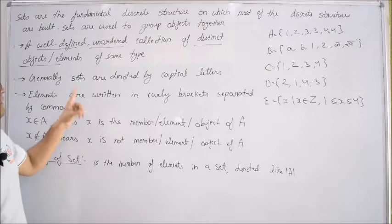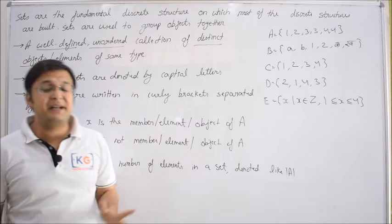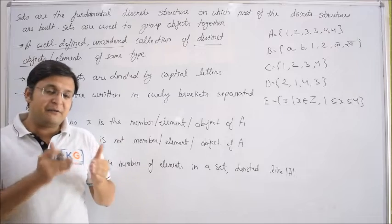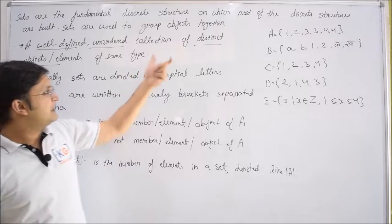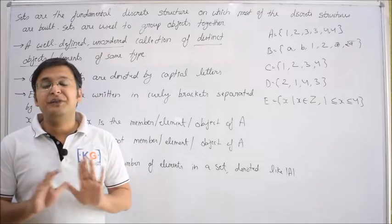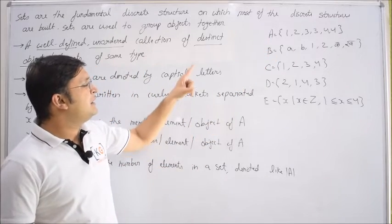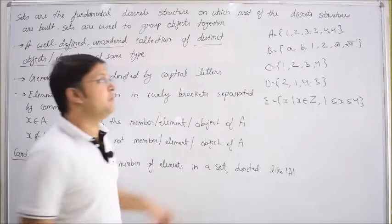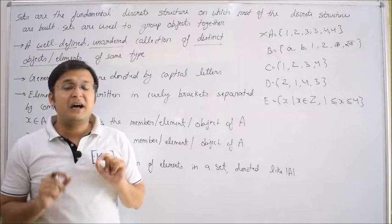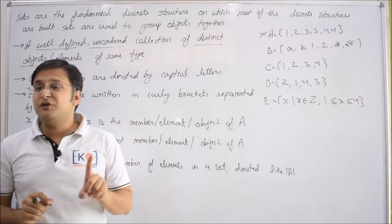A set is a well-defined, unordered collection of distinct elements or objects of the same type. Let me take it word by word. First: distinct. Can a set contain duplicates? No, never. For example, option A: 1, 2, 3, 3, 4, 4 — this collection cannot be a set because a set never allows duplication. Every element must be distinct. This point should always be remembered.